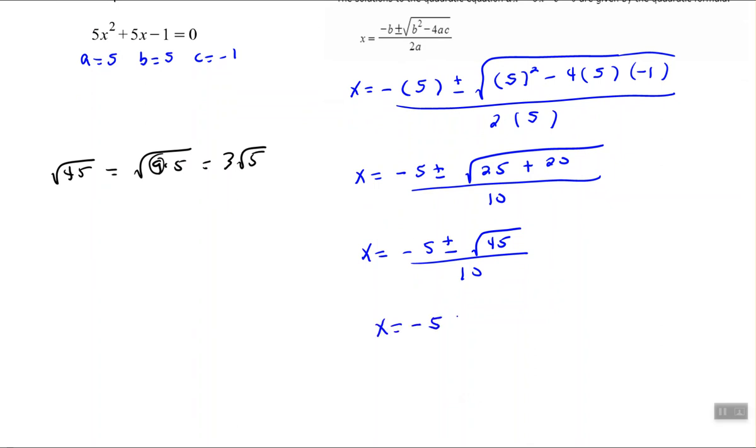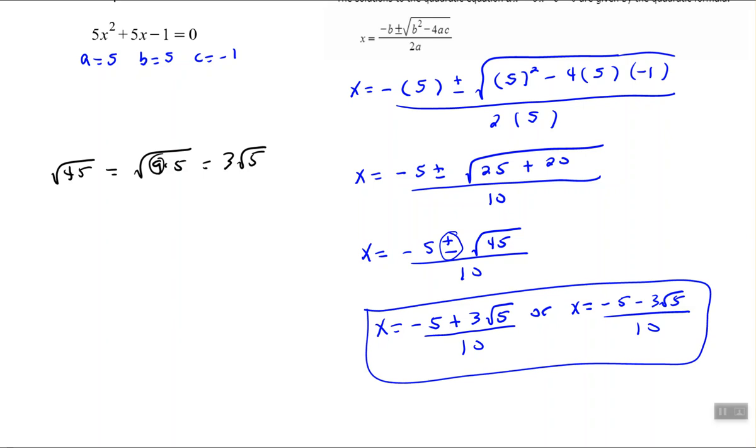So I'm going to simplify this a little bit. And it said to leave it as an exact answer. That means I don't want a decimal answer. And I'm going to separate it. I'm not sure if they'll ask for a comma or the word or. Either one is fine. Just make sure you follow your instructions. So we have -5 + 3√5 all over 10 or x equals -5 - 3√5 all over 10. So we split up this plus minus to make the two different answers.